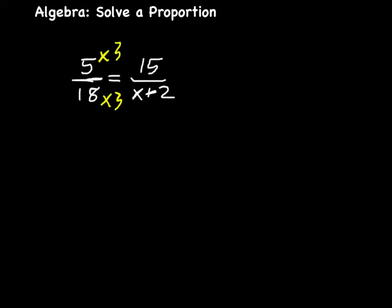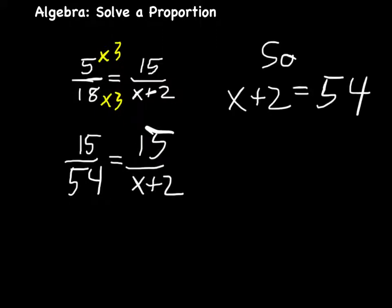By multiplying the numerator and denominator on the left by 3, I can get an equivalent fraction, which is equal to 15 over 54. Therefore, 15 over 54 must be the same as 15 over x plus 2. Because I have a 15 in both numerators, the only way for this to be true is for x plus 2 to actually equal 54.